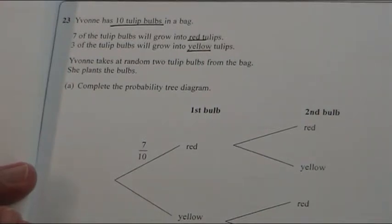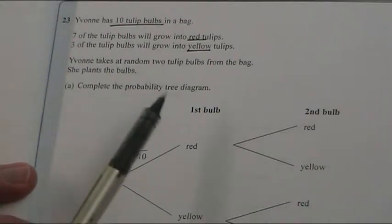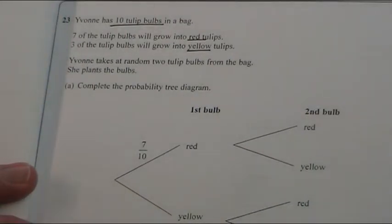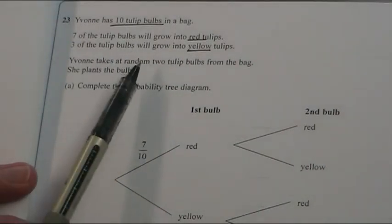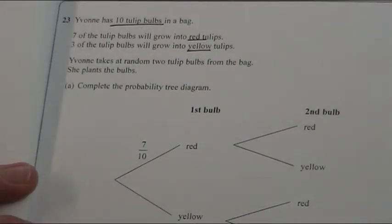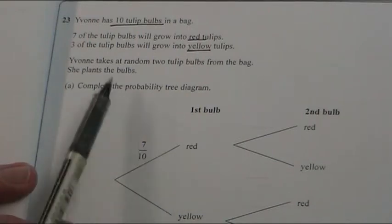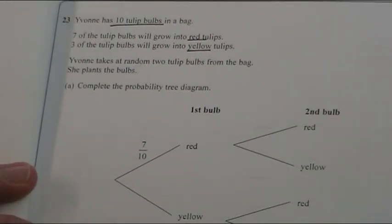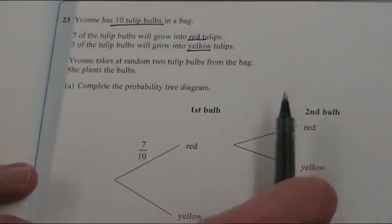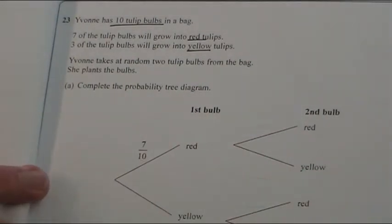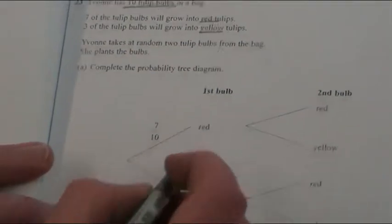You've got to always think to yourself, does the first bulb affect the second one? And of course the answer here is yes, because whatever you take is going to change what is left if they're not being put back. The key words are, does it say the bulbs are being put back in? No means they're not. So this result is going to have an effect on this one. It's what we call conditional probability.